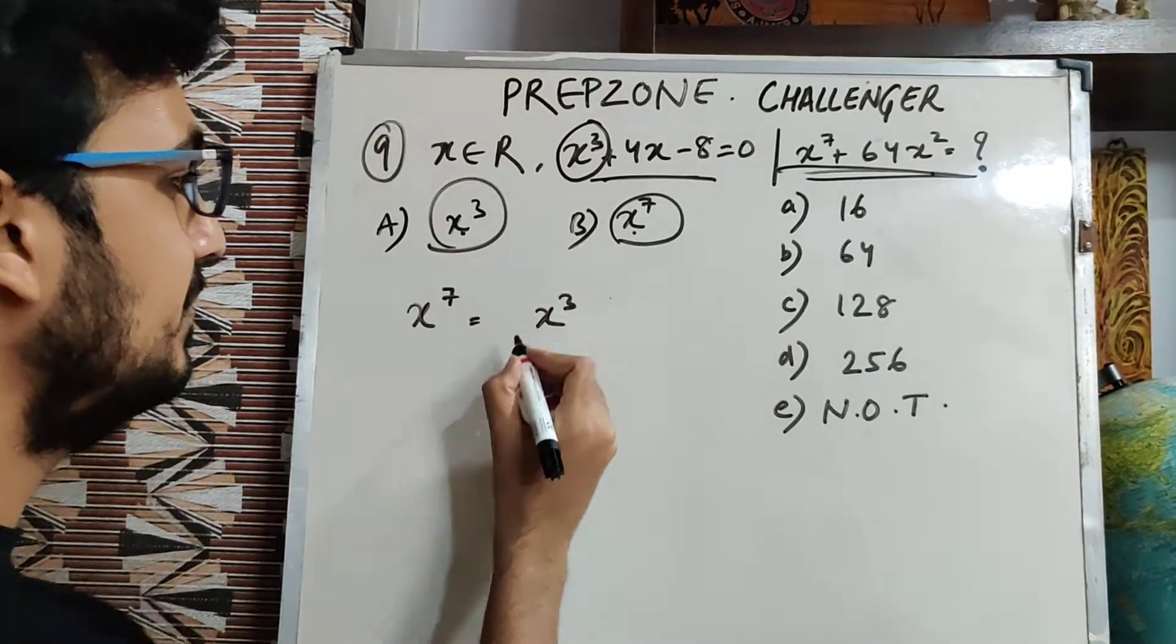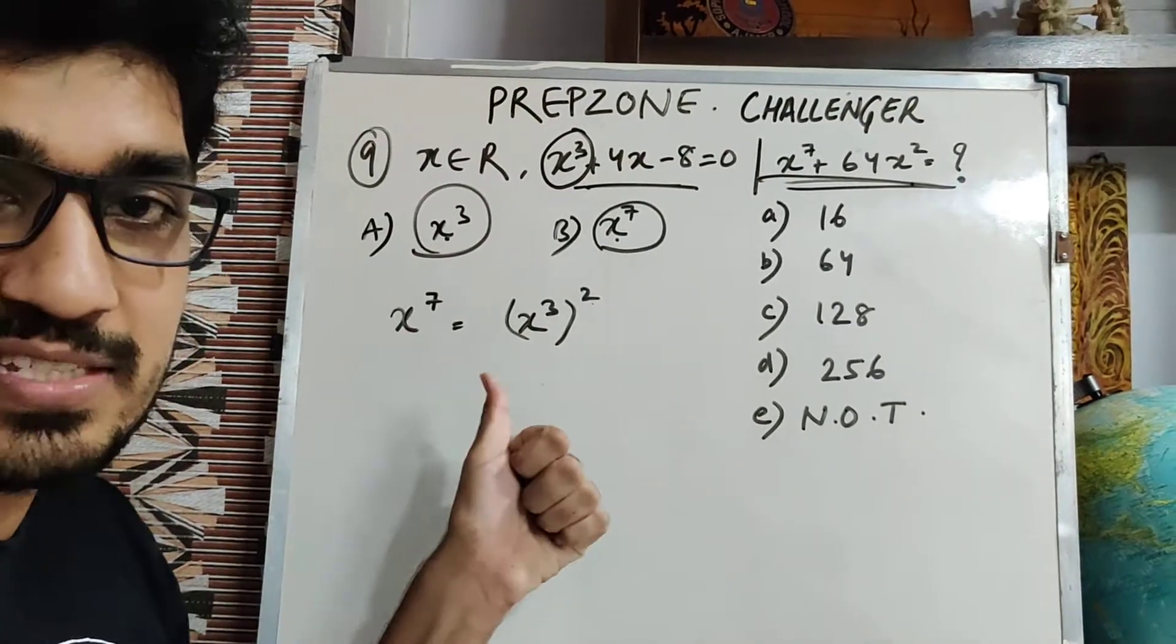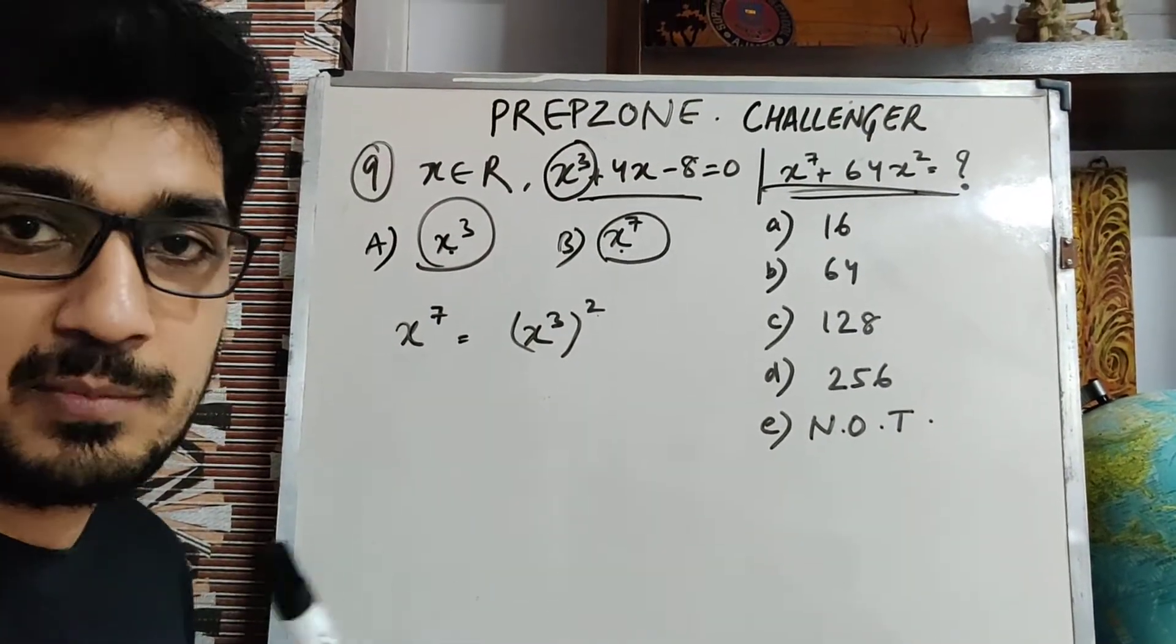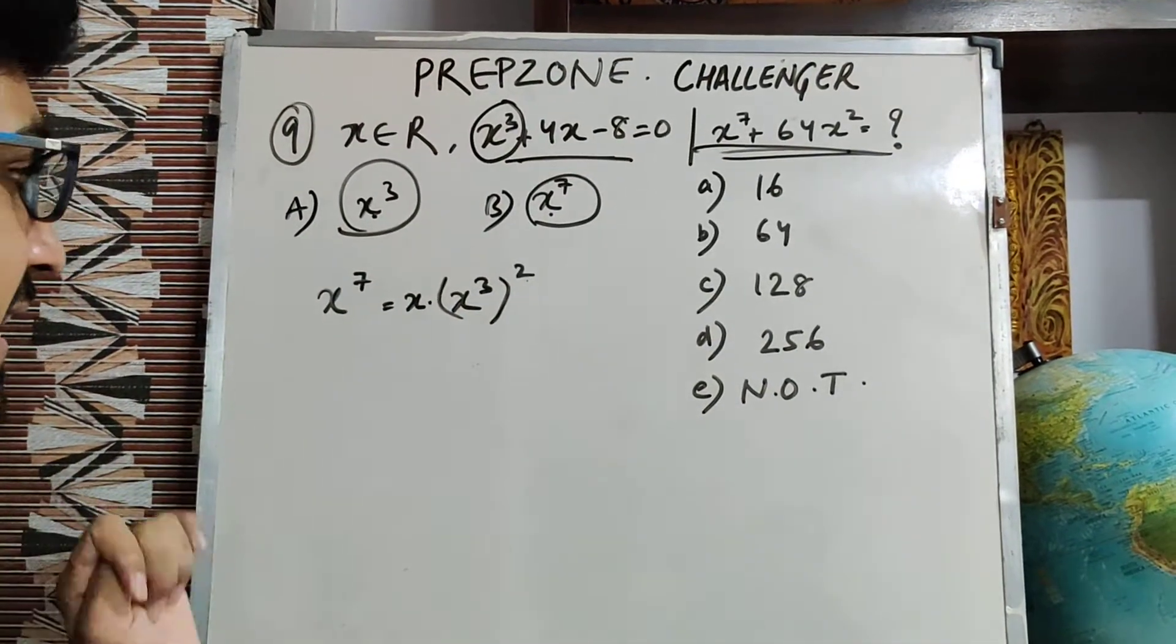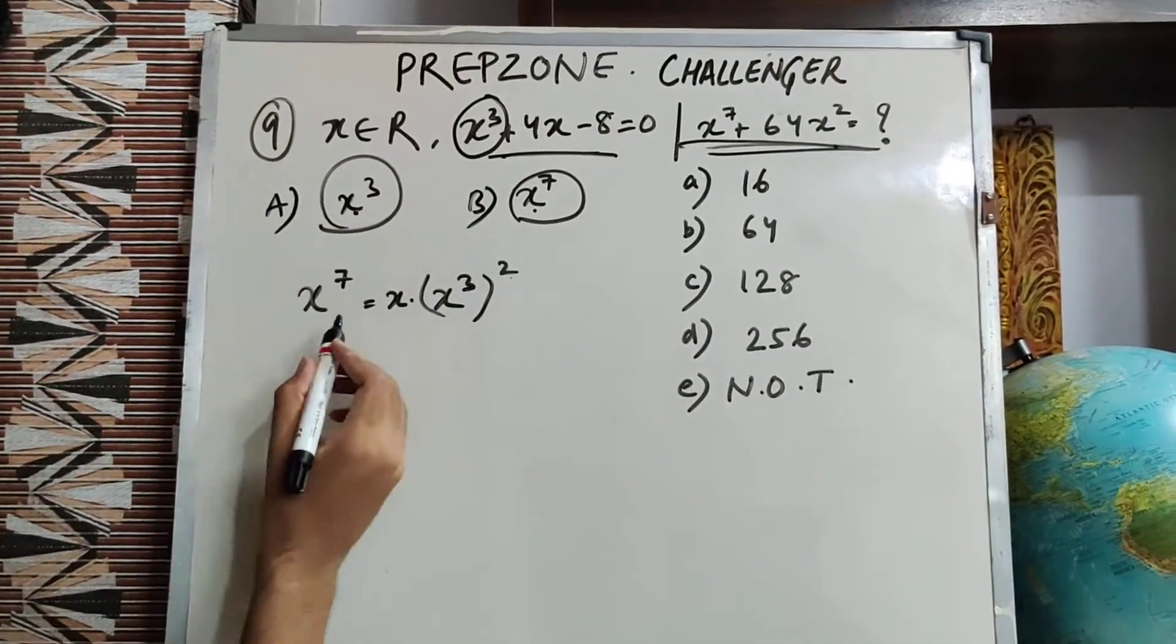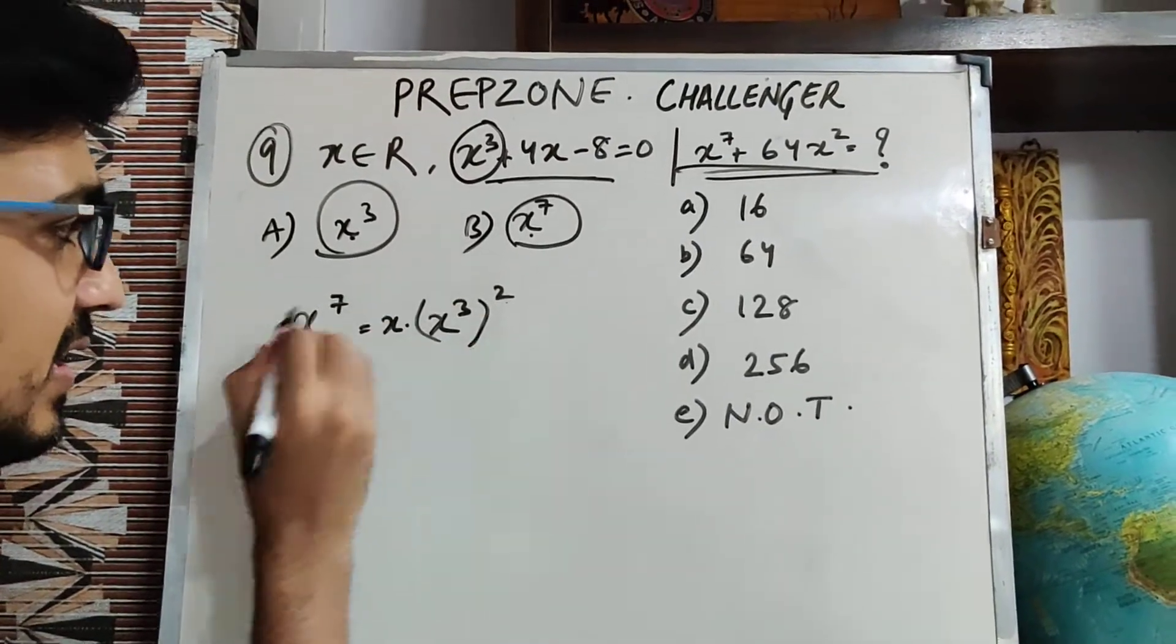I know that x⁷, if I do (x³)² whole square, then I will get x⁶. But here we have x⁷, right? So I will have to multiply this equation with x. Only then I can get this equation right. This is x⁷, and this is x times x⁶ which is x⁷.